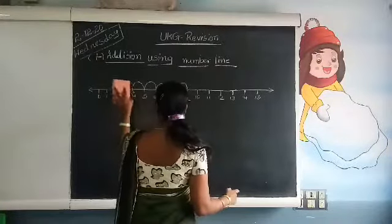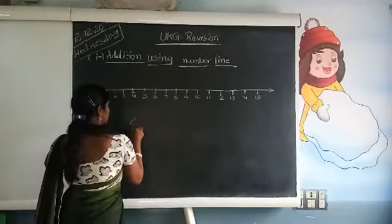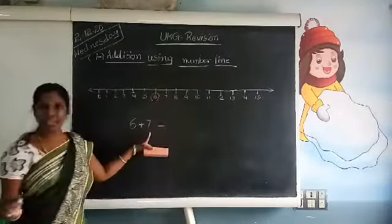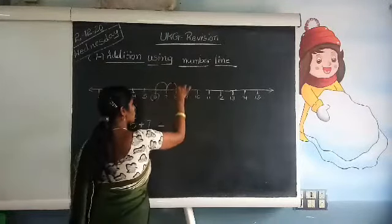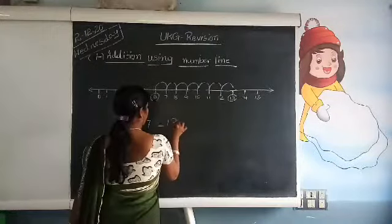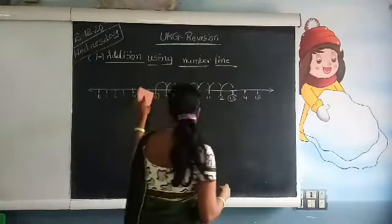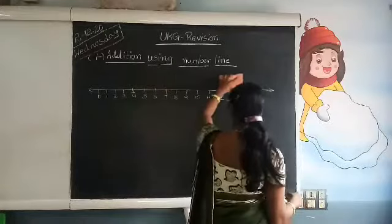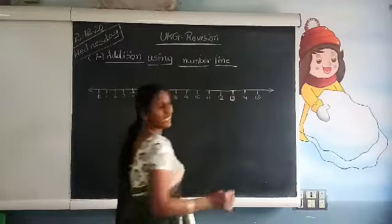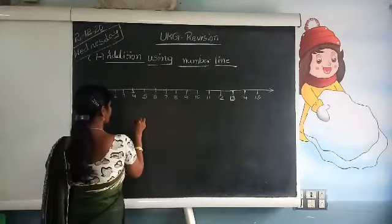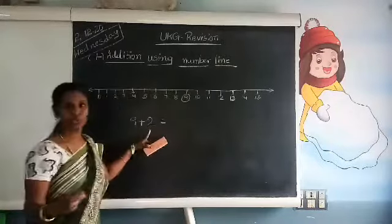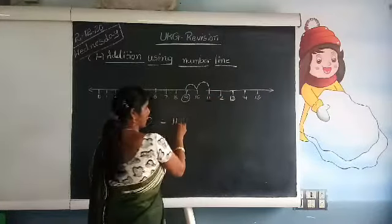One more time. 6 plus 7. What is the first number? 6 — circle 6. What is the next number? 7, so 7 times you have to jump: 1, 2, 3, 4, 5, 6, 7. What is the answer? 13. Next: 9 plus 2. 2 times you have to jump: 1, 2. What is the answer? 11.